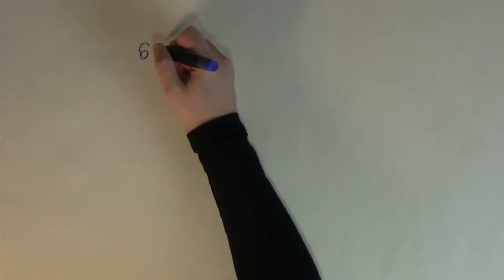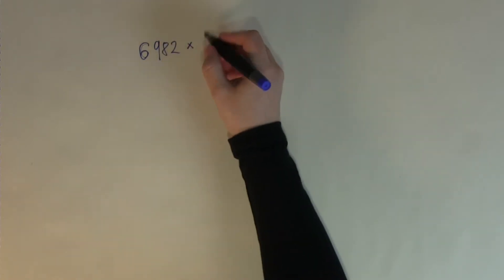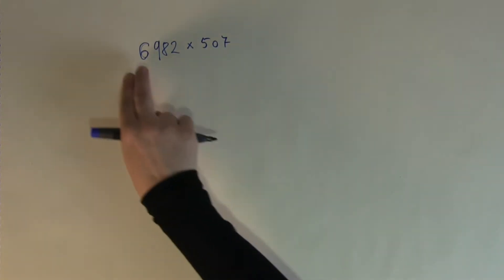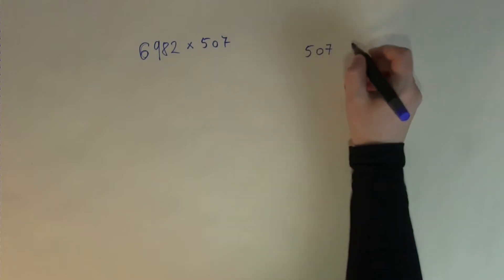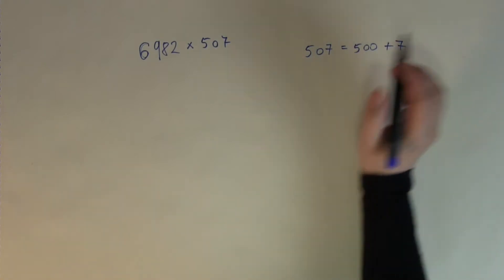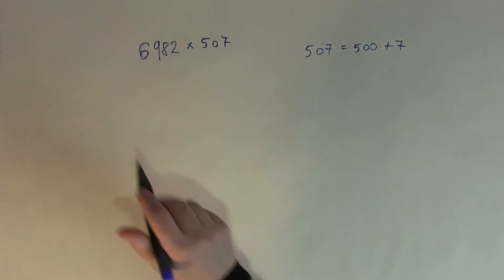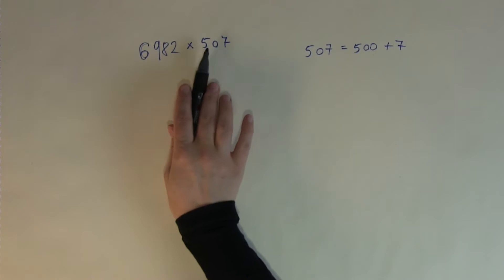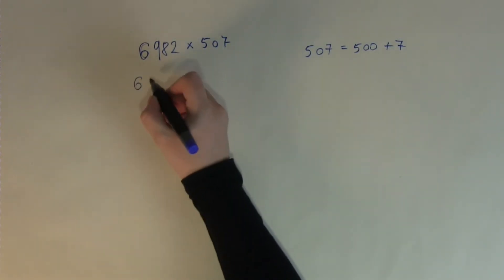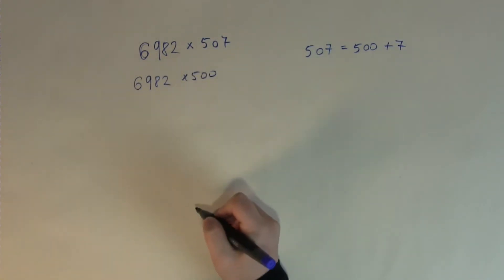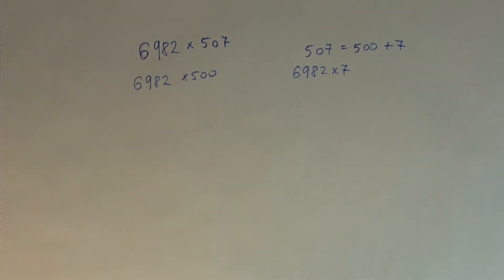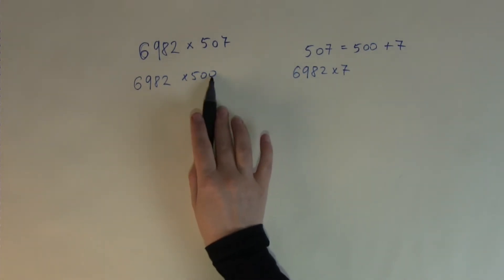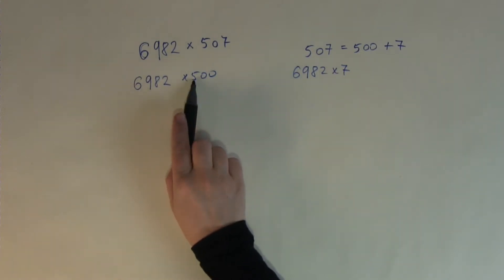So what is partitioning? When you have two big numbers in decimal such as 6,982 multiplied by 507, instead of going straight into the big multiplication you can partition — take apart — the smaller number. So 507 is the sum of 500 plus 7. The advantage is that multiplying any number by multiples of 100, you just put two zeros and then only multiply by one digit.